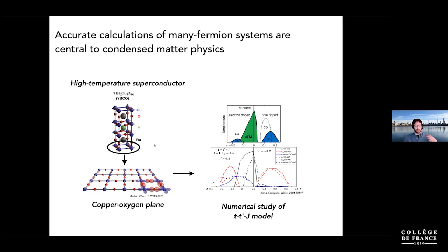To make progress on systems like that, it's been hoped that we could simplify and simplify and break this problem down to its essence. One simplification is to focus on two-dimensional planes of these superconducting materials, and create models of various complexity to understand whether simple models can capture most of the story — for example, the T-prime J model, not too far from the Hubbard model.